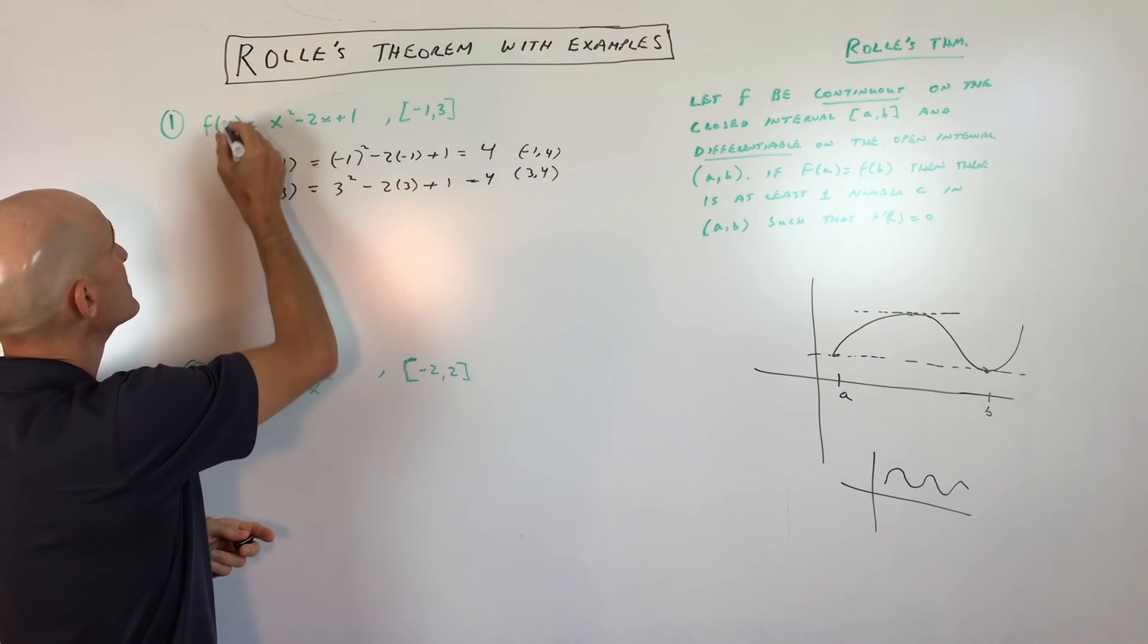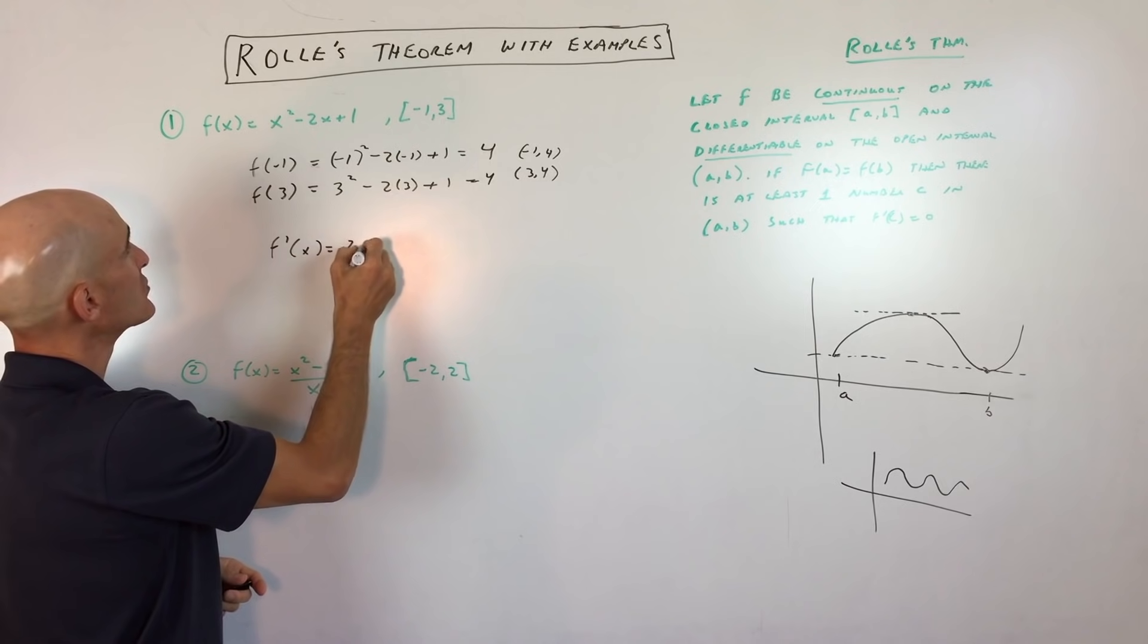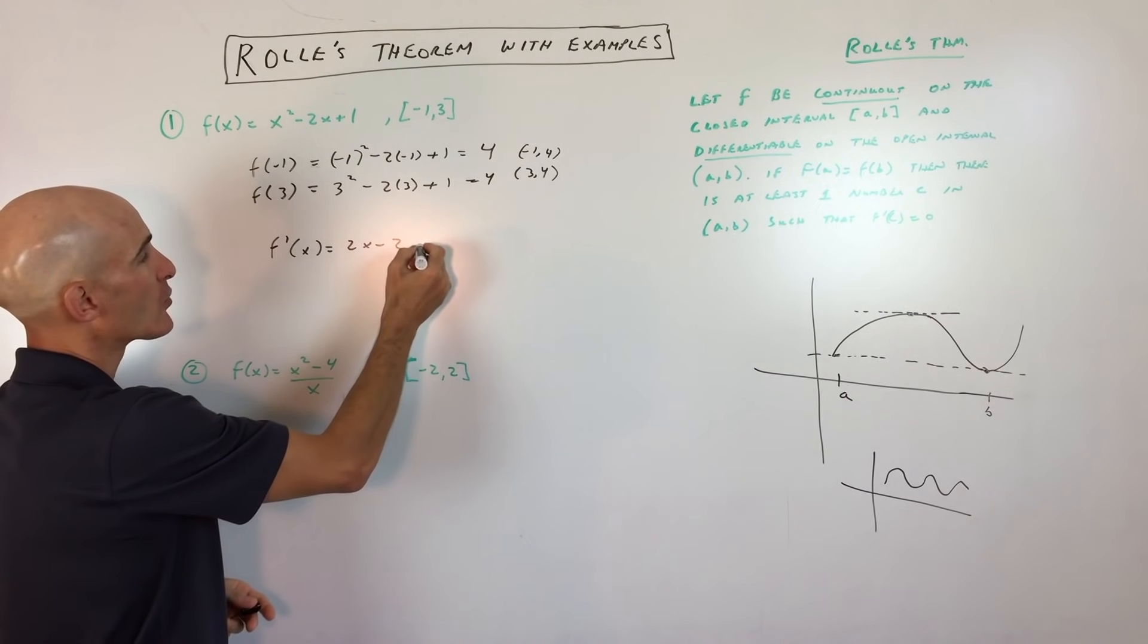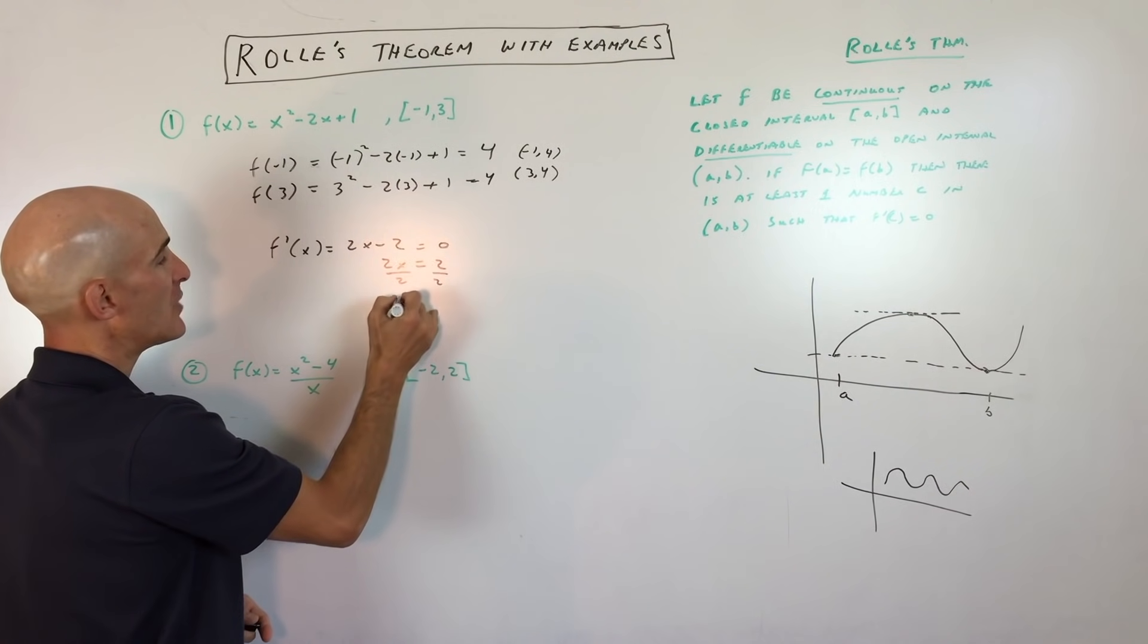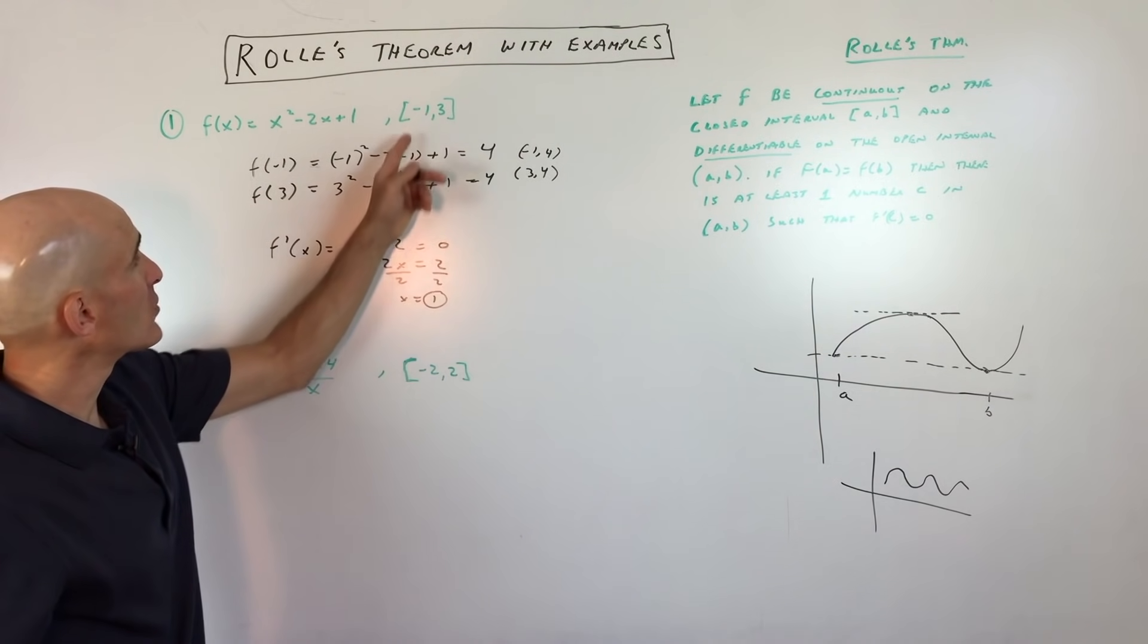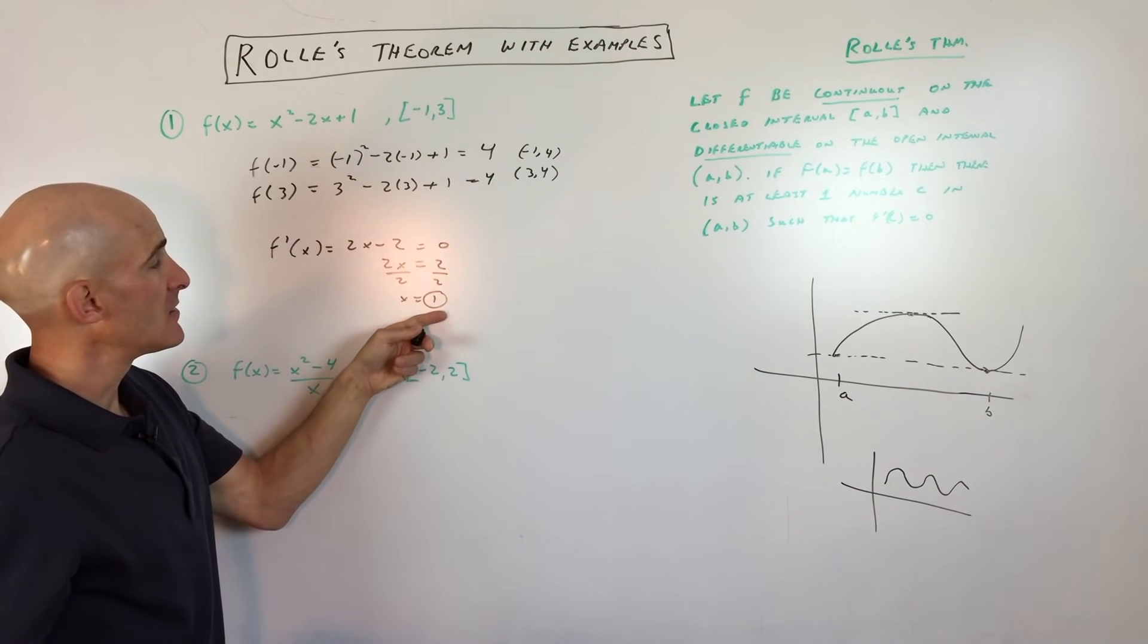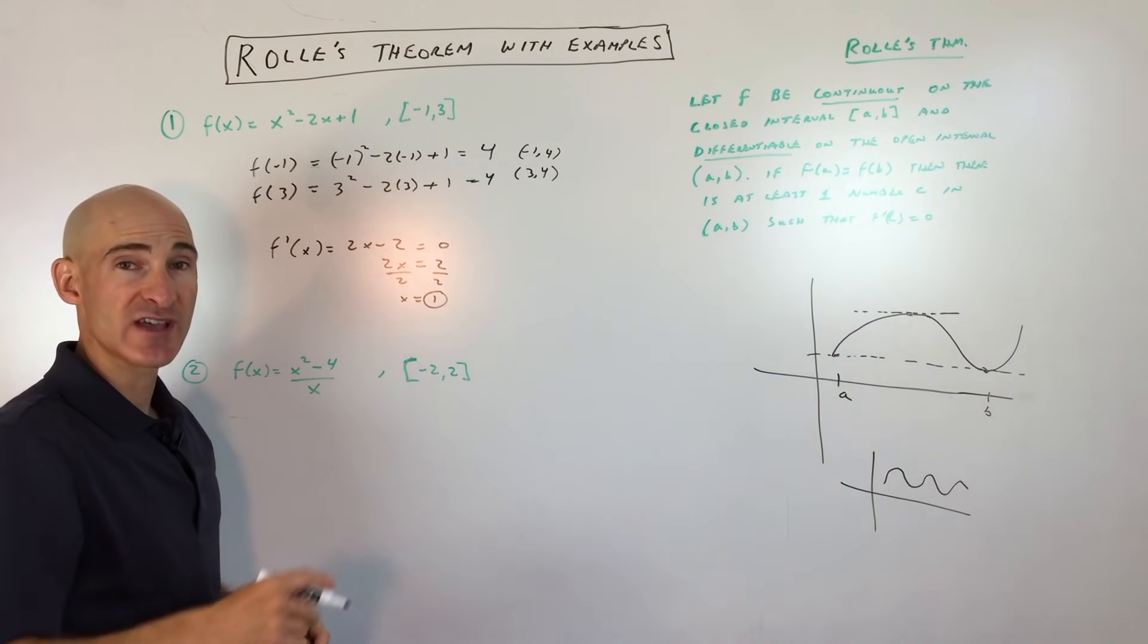And so what we're going to do now is we're going to take the derivative, so f prime of x equals 2x minus 2. We're going to set that equal to 0, add 2 to both sides, and then divide by 2. And you can see that that value is going to be when x equals 1. 1, of course, is in between negative 1 and positive 3, and the slope of the tangent line at that point is going to be 0. It's going to be horizontal.